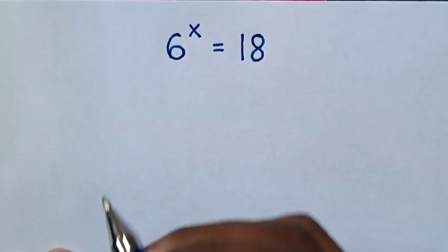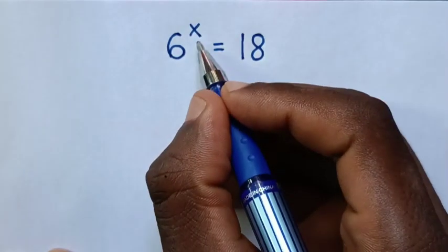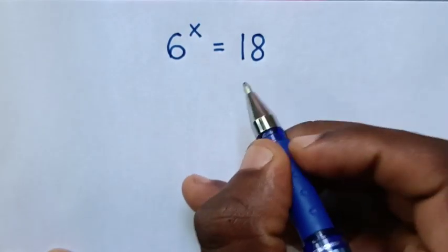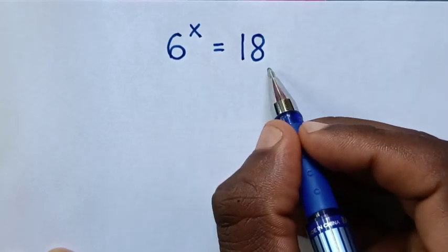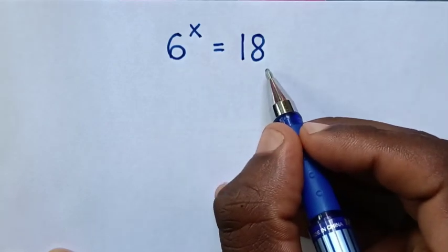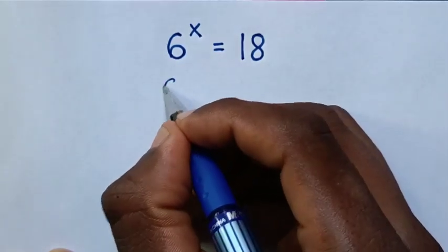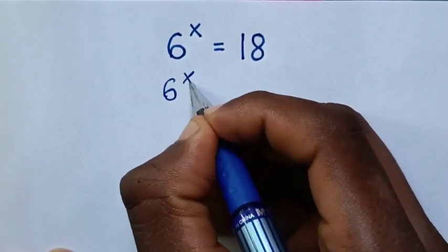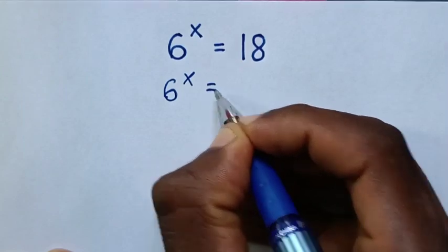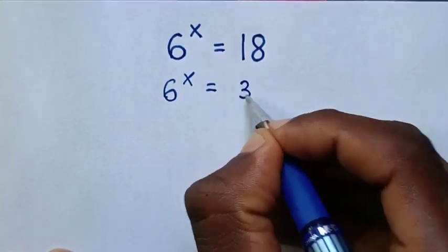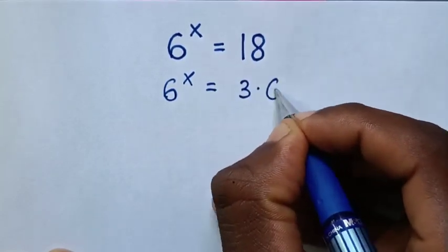Hello! How to solve 6 power x is equal to 18? To find the value of x from this equation. So from here, 6 power x is equal to 18, which is the same as 3 times 6.